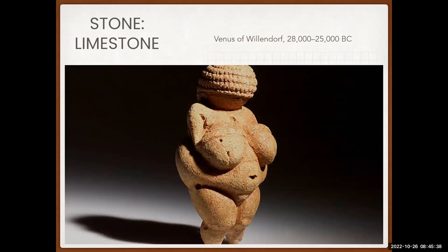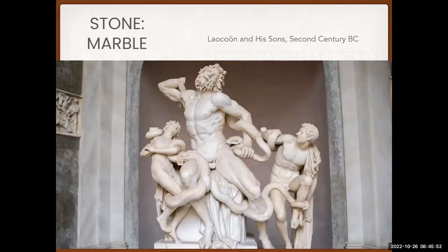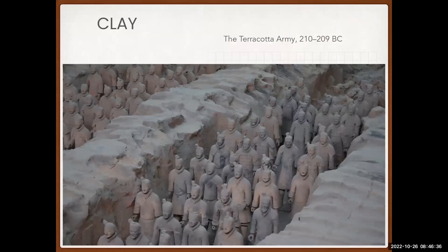Another sculpture medium is marble. Because of its characteristics, we have seen works like Laocoon and His Sons from the second century BC, and Michelangelo's Statue of David. These are carefully preserved — the goal of preservation is not to change the artwork but to maintain its original characteristics. We also have the very famous Terracotta Army in China from 210 to 209 BC — these are statues made using clay, depicting an army in exquisite detail.